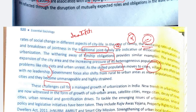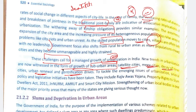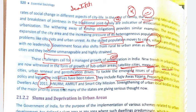These are all changes that call for managed growth of urbanization in India. New trends in urbanization are witnessed in the form of growth of suburban areas, satellite cities, mega cities, decay of inner cities, urban renewal, and gentrification drives — where areas are converted to urban areas and developed with infrastructure. To tackle the emerging issues of urbanization, several policy and legislative initiatives have been taken, such as Rajiv Awas Yojana, Property Rights to Slum Dwellers Act 2011, JNNURM, AMRUT, and the Smart City Mission. These are schemes that have been discussed in the urbanization chapter.